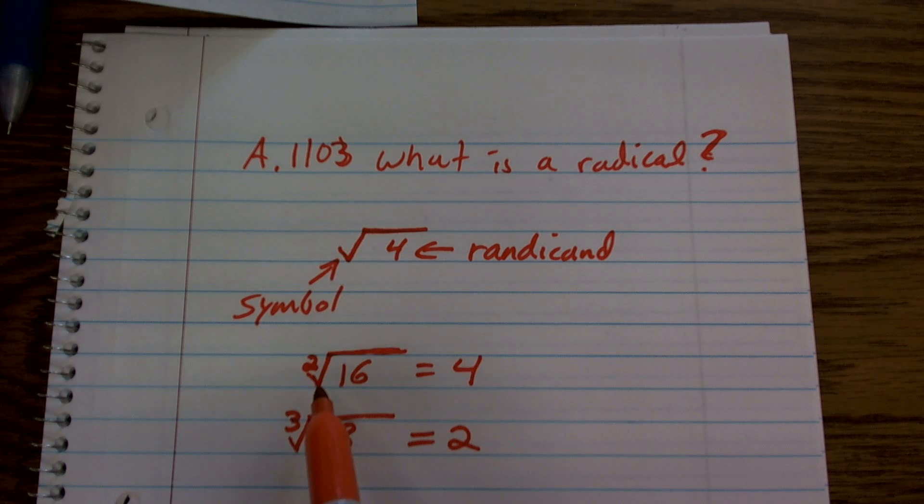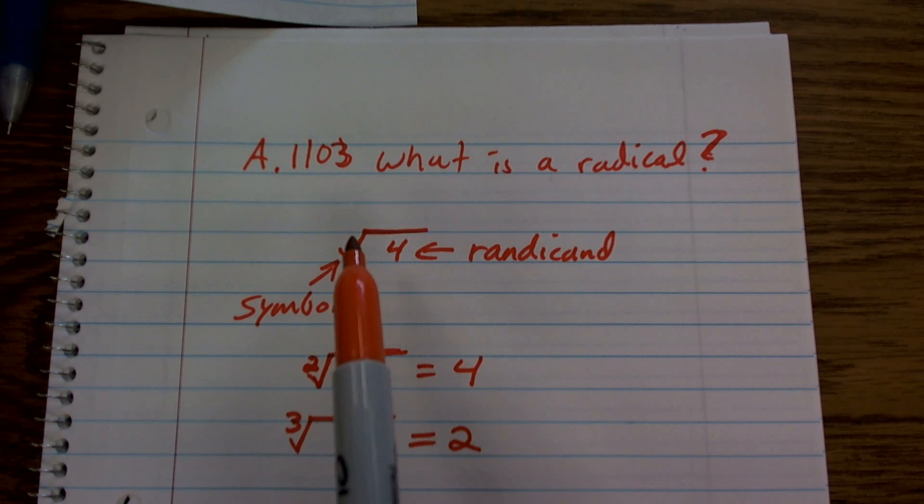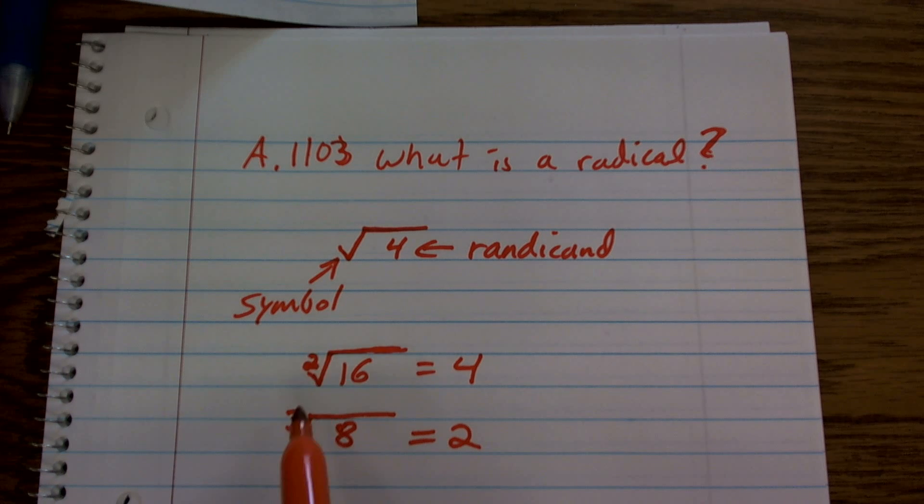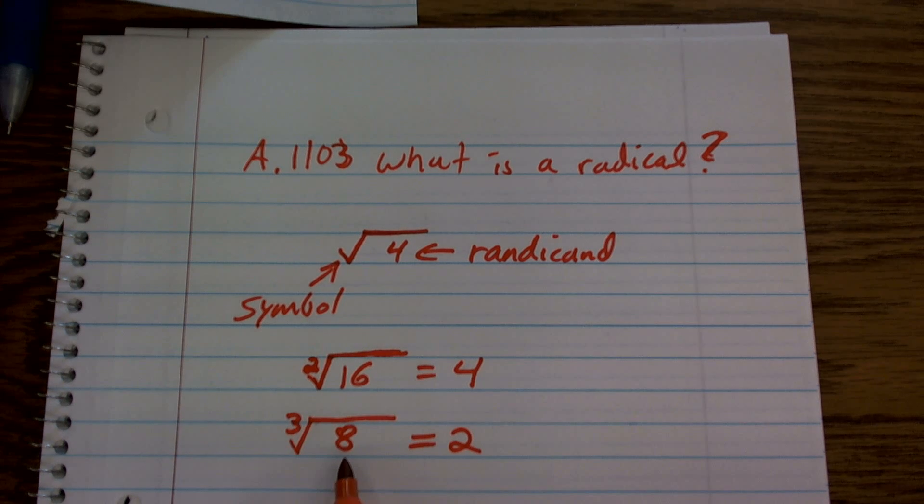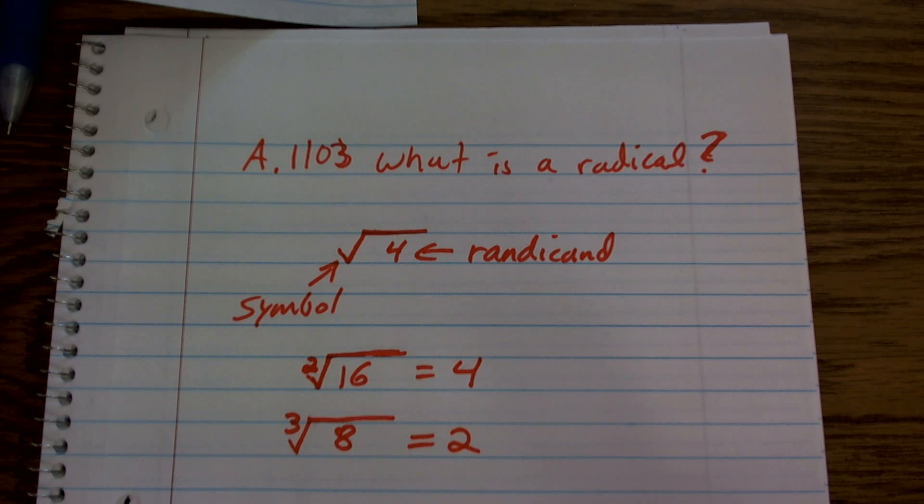If we don't have a number in front, we assume it's going to be 2. However, if we have a number in front, that just tells you how many times you have to multiply a number by itself to get to the radicand. And that's really just the basics of the radical symbol.